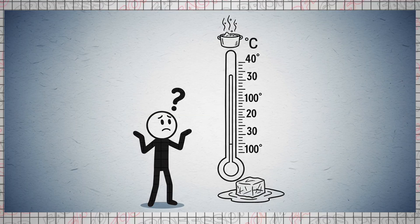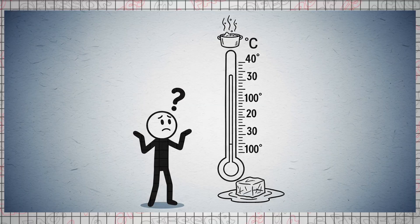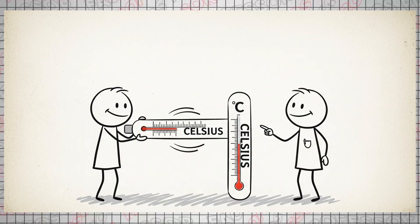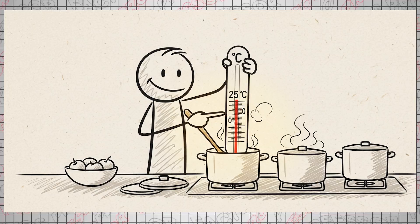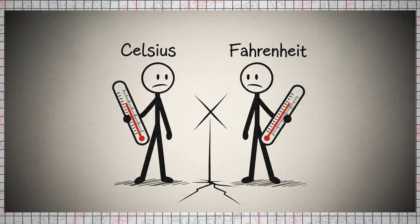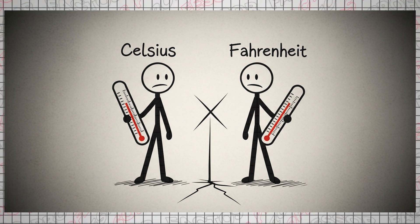The Celsius Scale was first proposed by the Swedish astronomer Anders Celsius in 1742. Interestingly, it was initially inverted compared to what we know today: water boiled at 0 degrees and froze at 100 degrees. Later, scientists reversed it but kept the name to honor Celsius. Clearly, the Celsius Scale is simpler, more intuitive, and better suited for everyday life.